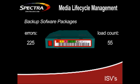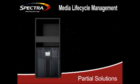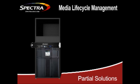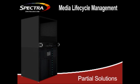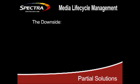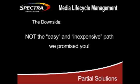Most will also track a tape in a given partition. Of course, this solution only works if you're willing to leave your tapes in a single media pool and the barcode is never compromised. There are other partial solutions as well — standalone appliances that monitor drive throughput and track media errors, alerting you when the drive slows down or an error threshold is passed. But even then, media information is jointly reported with drive information, which can make sorting out tape errors from drive errors complicated, if even possible. And the real downside is that you're forced to purchase, install, and support an additional appliance in your library. With a combination of these solutions, it may be possible to sort out some basics, but it's not the easy and inexpensive path we promised you.